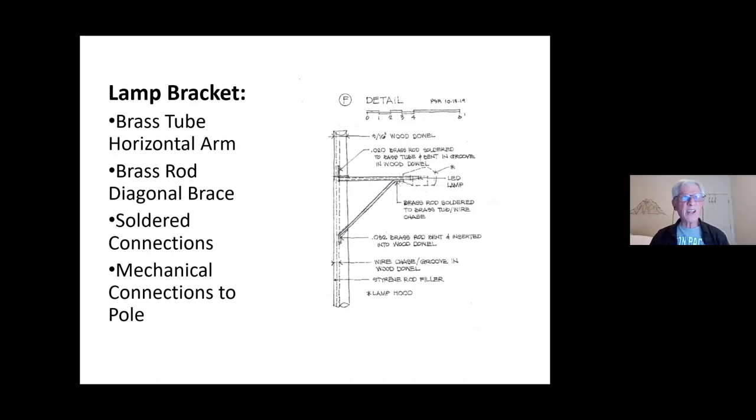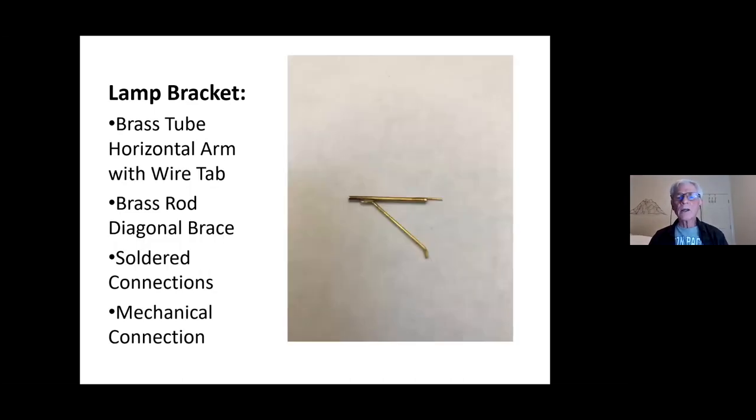And then there is this angular bracket, heavier brass material here. As you can see, this is 32 thousandths and this is 20 thousandths here. And so those are soldered together. And as you can imagine, you can set up a jig and just go to town making gobs of them.